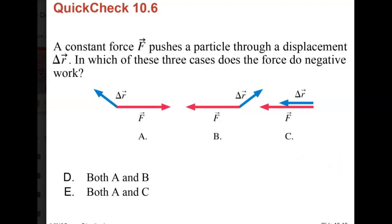All right, a constant force F pushes a particle through a displacement delta R. Here is the force. Here is a delta R in three cases. In which of these three cases does the force do negative work? Well, both A and B, both A and C.